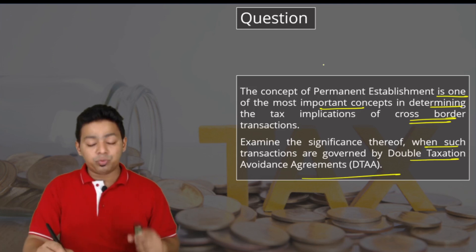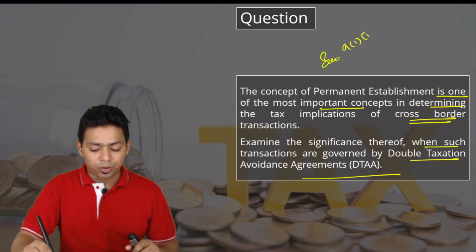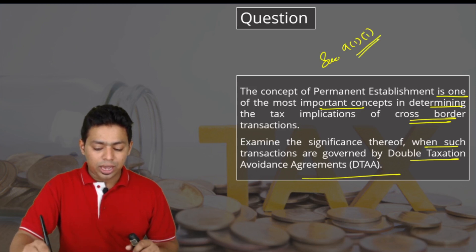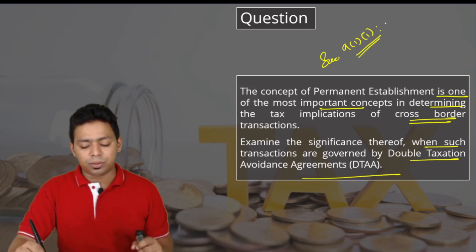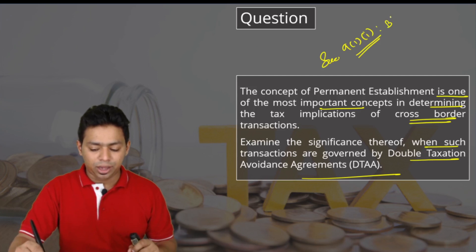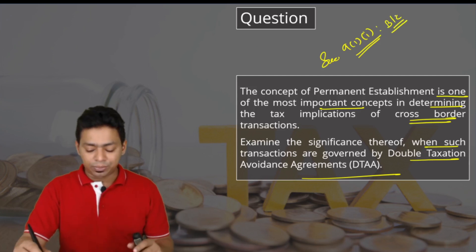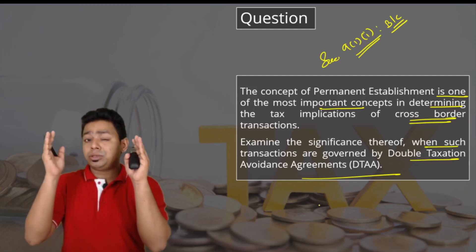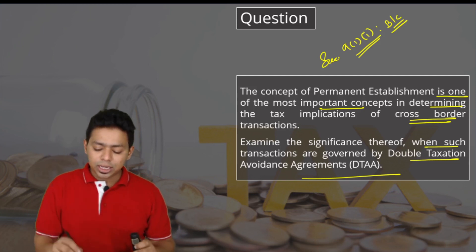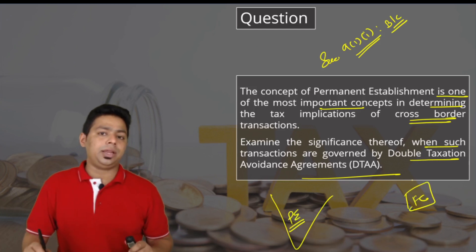Without DTAA, income is taxable under Section 9(1)(1), where income becomes taxable for foreigners in India based on business connection, which is a very wide concept compared to permanent establishment. Permanent establishment is the fixed place of business — unless foreigners have a permanent establishment in India, they are not liable to pay tax in India.